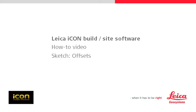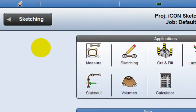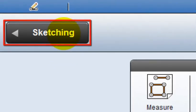This video explains how to use the offset function in sketching to apply an offset to design data. Because sketching was the last used application, it can be accessed from this back button.